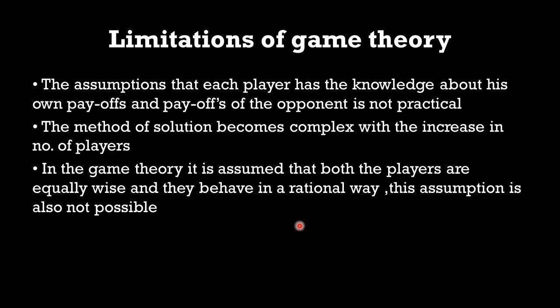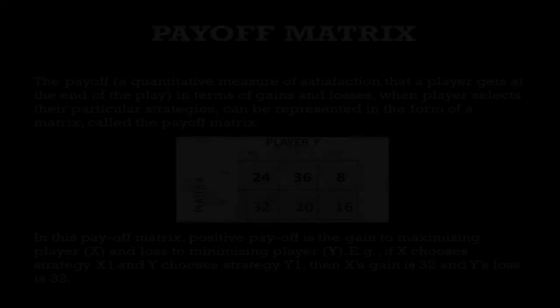The major limitations of game theory include: the assumption that each player knows their own payoffs and those of the opponent, which is not always practical. For example, Colgate may not fully know what strategies Pepsodent will take, even with business intelligence. The method of solution also becomes complex as the number of players increases — in an oligopoly market with many players, creating a payoff matrix becomes very difficult. Additionally, game theory assumes both players are equally wise and behave rationally, which is also not always realistic.